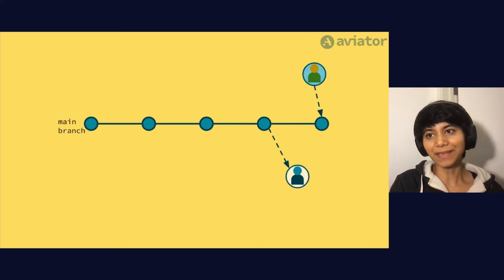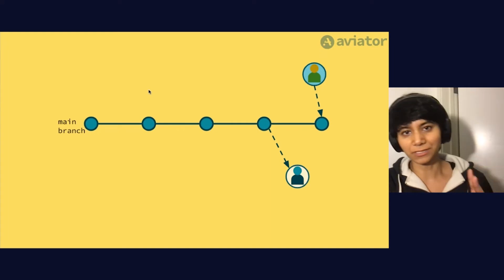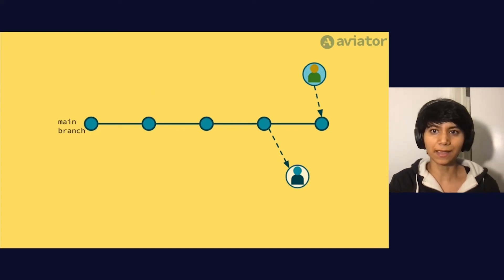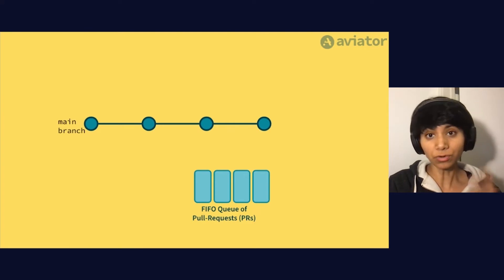So to automate this, you realize this becomes really cumbersome and so you want to start automating this. And so to automate this manual process, you may decide that you want to build a bot. And we at Aviator actually did build a bot where you now have a bot that maintains a queue of pull requests in a very simple, first in first out fashion.